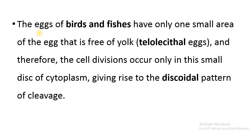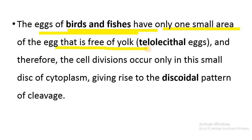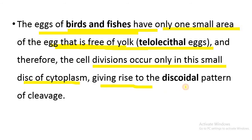The eggs of birds and fishes have only a small area of the egg that is free of yolk. In the case of a telolecithal egg, only a small yolk-free area exists, and therefore cell division occurs only in this disc of cytoplasm, giving rise to the discoidal pattern of cleavage.